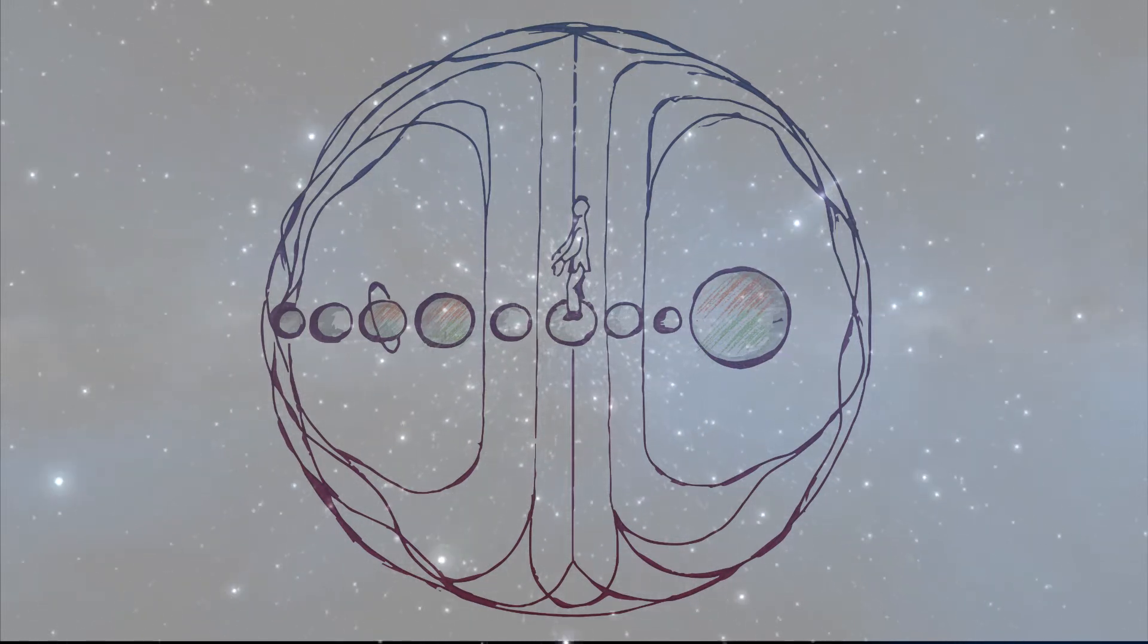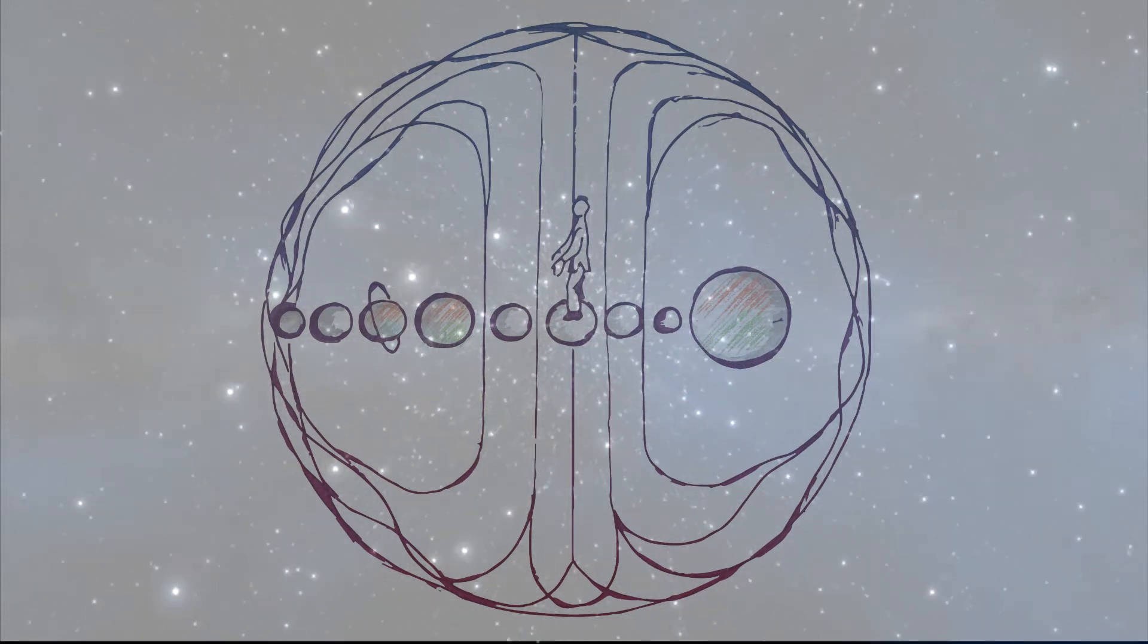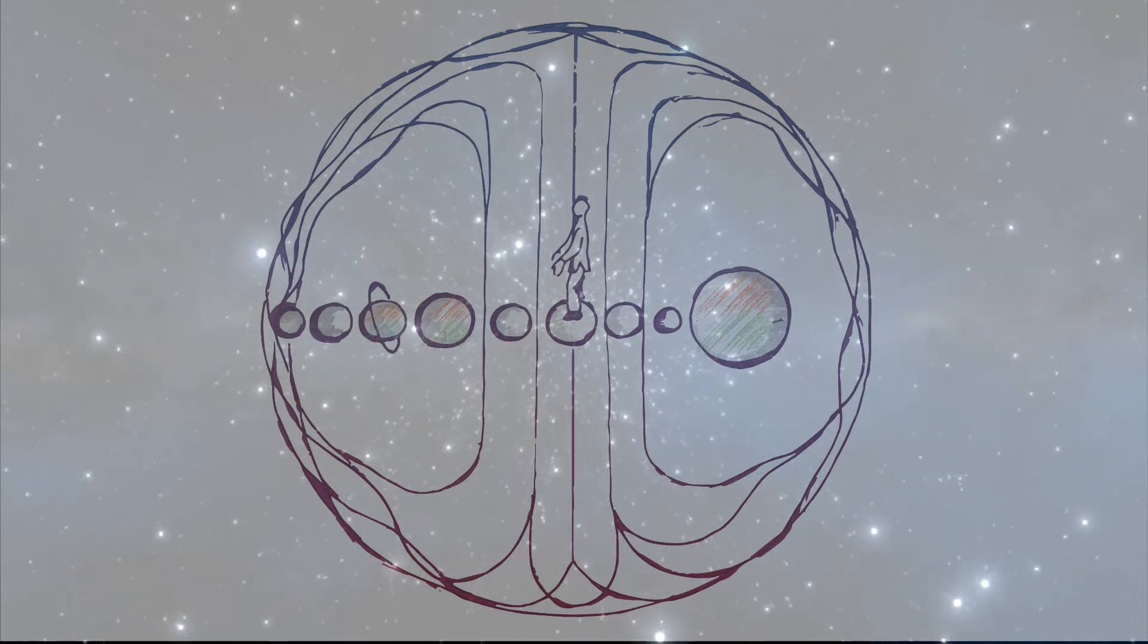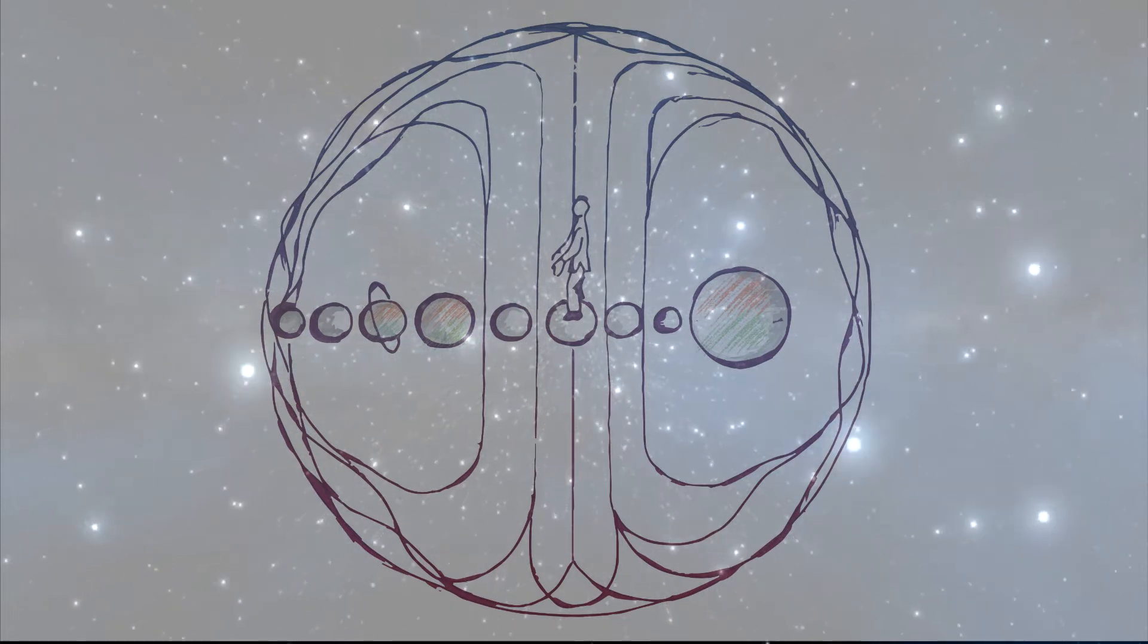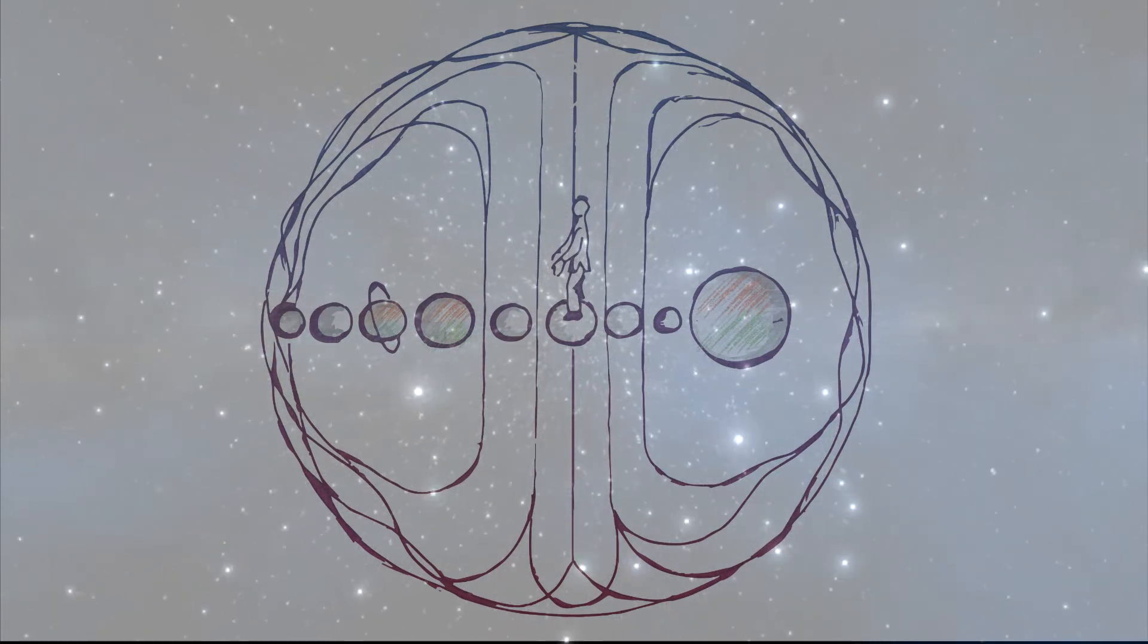When we open the transcendental channel to the entire solar system, our transcendental energy is revealed in volume. All our channels are united. They go through the center of the body and open from above and below like the Tree of Life.